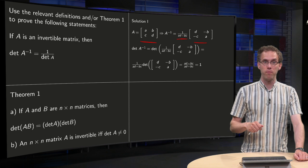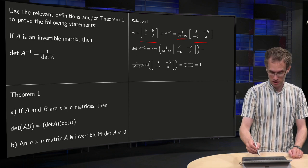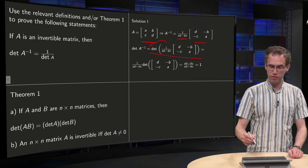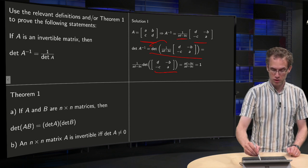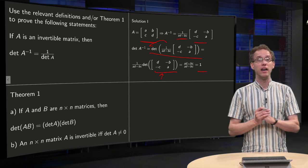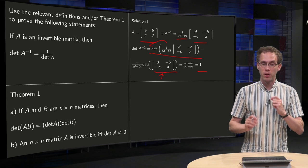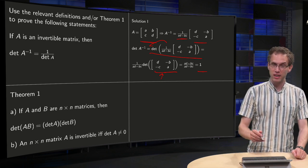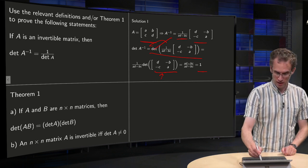And then we can compute the determinant of A inverse. It is the statement over here. We take out this factor over here in front, and we have the determinant of this matrix. Then we compute the determinant over here, we get ad minus bc, so we get 1. Is this correct? Well, there is an error over here.